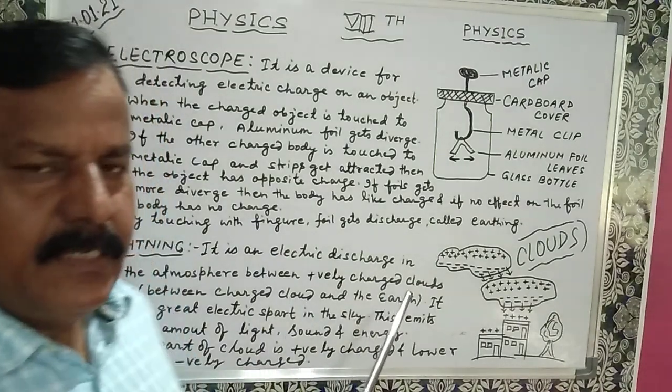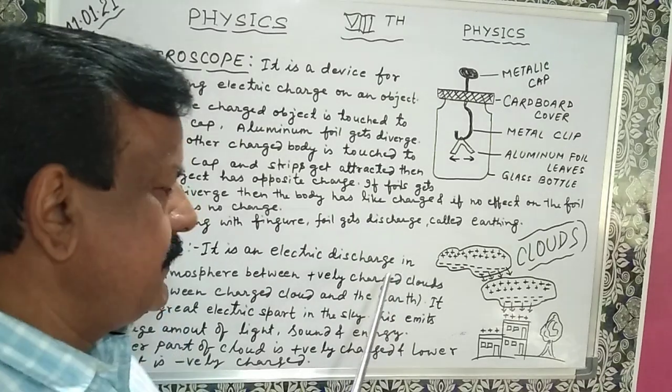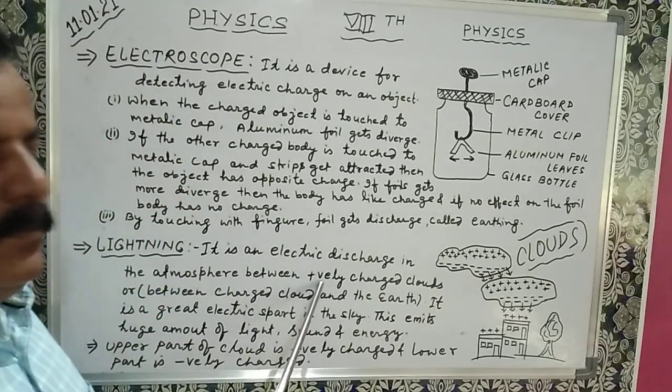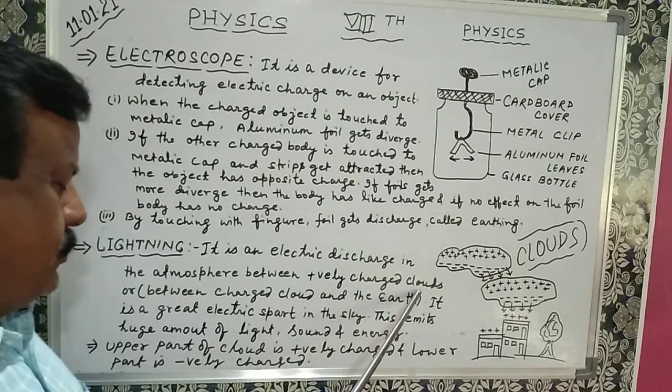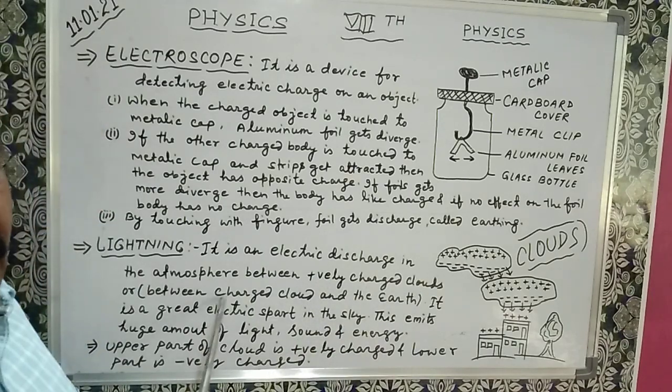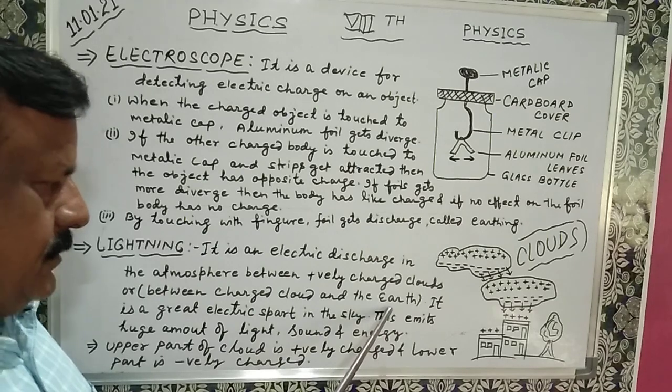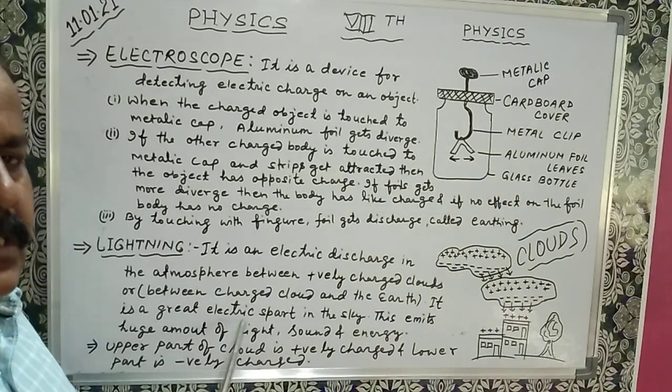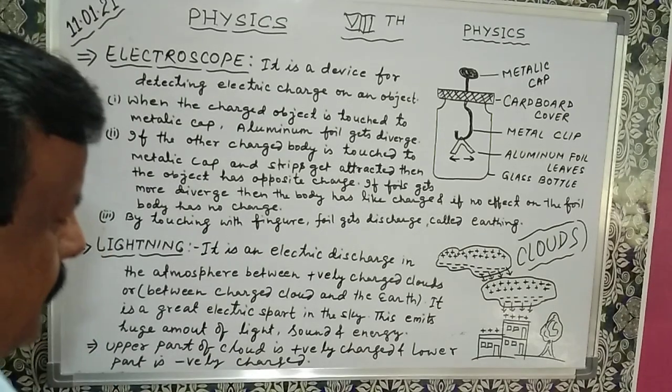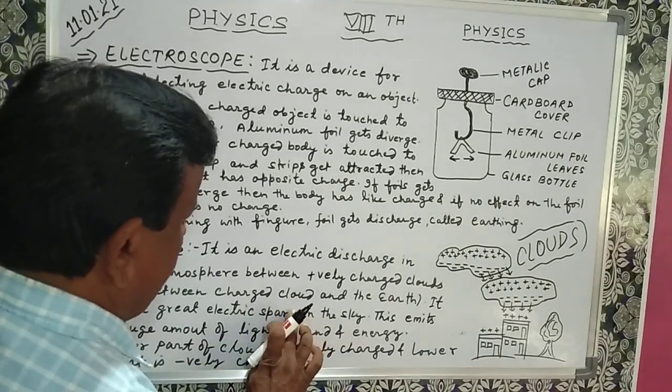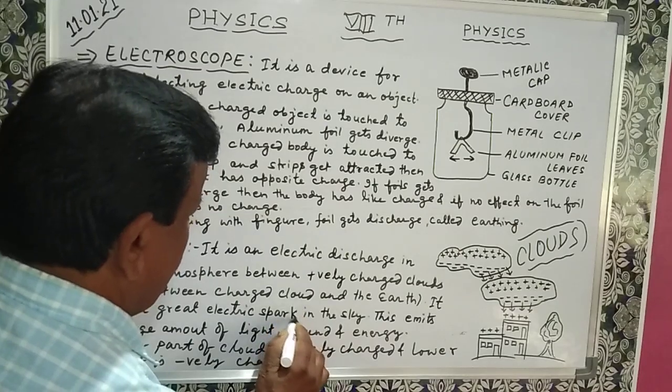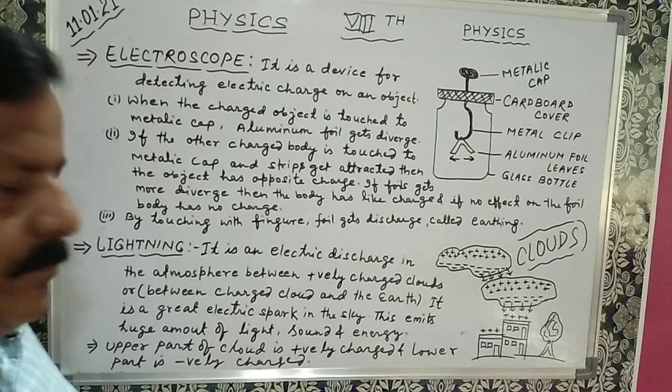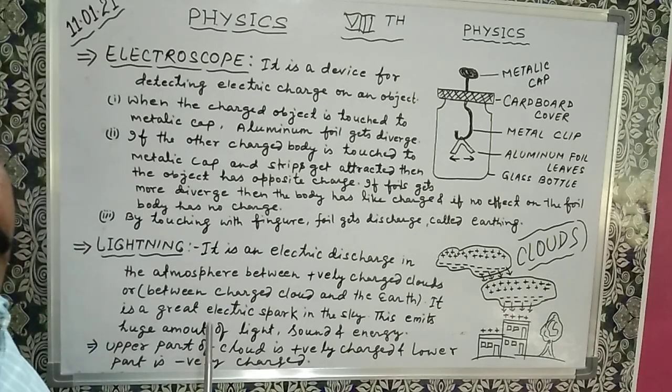Lightning is an electric discharge in the atmosphere between positively charged clouds or between charged clouds and the earth. It is a great electric spark in the sky. This emits a huge amount of light, sound and energy.